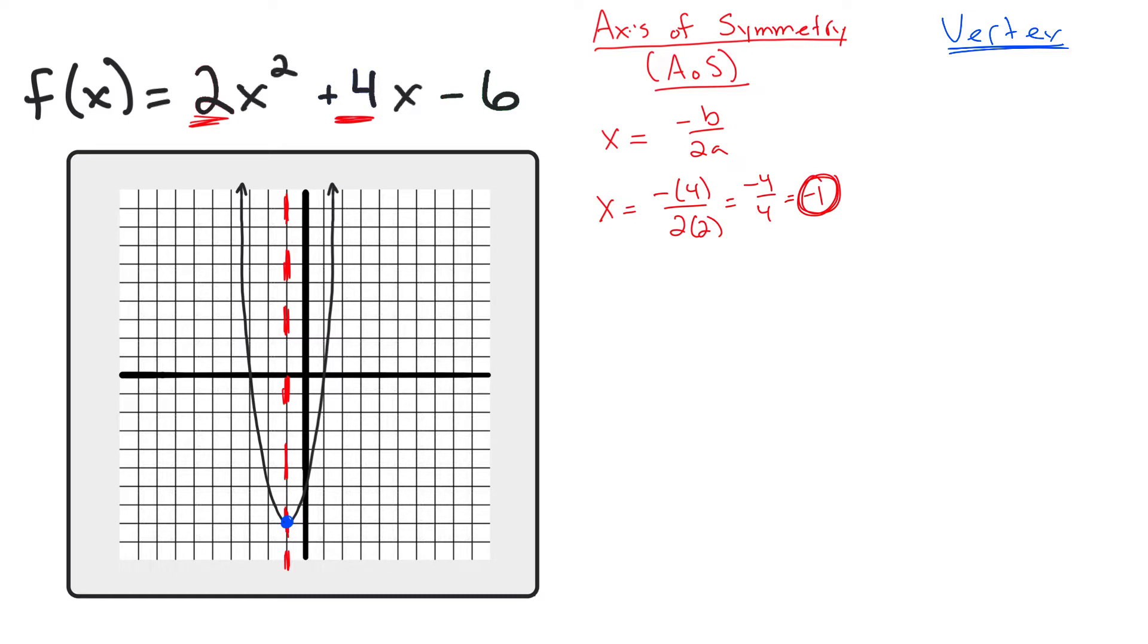Now, the way that I show you how to find it looks complicated, but it's actually really easy. It's going to be a coordinate. The x value of the coordinate is the negative b over 2a. It comes straight from the axis of symmetry.